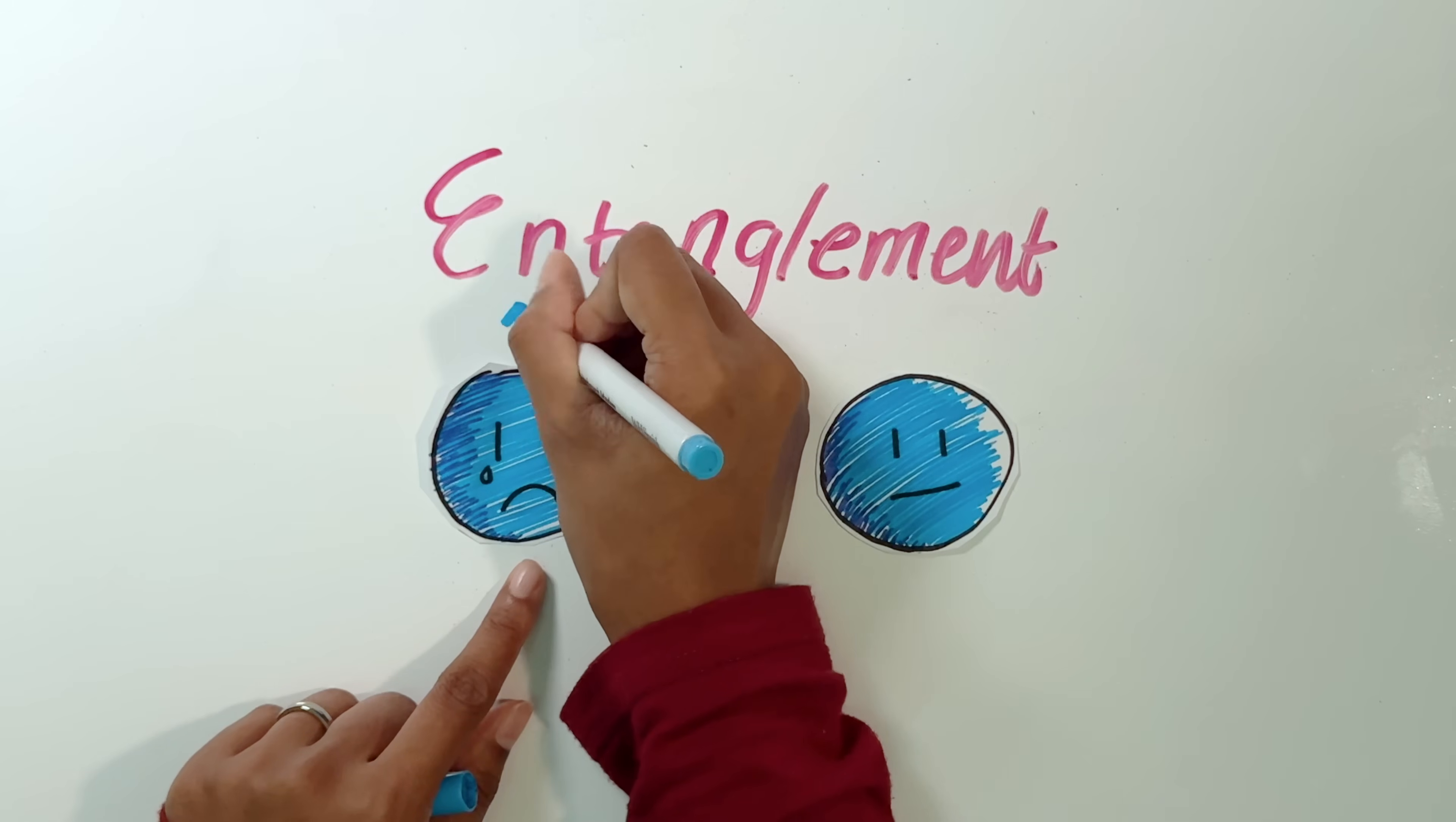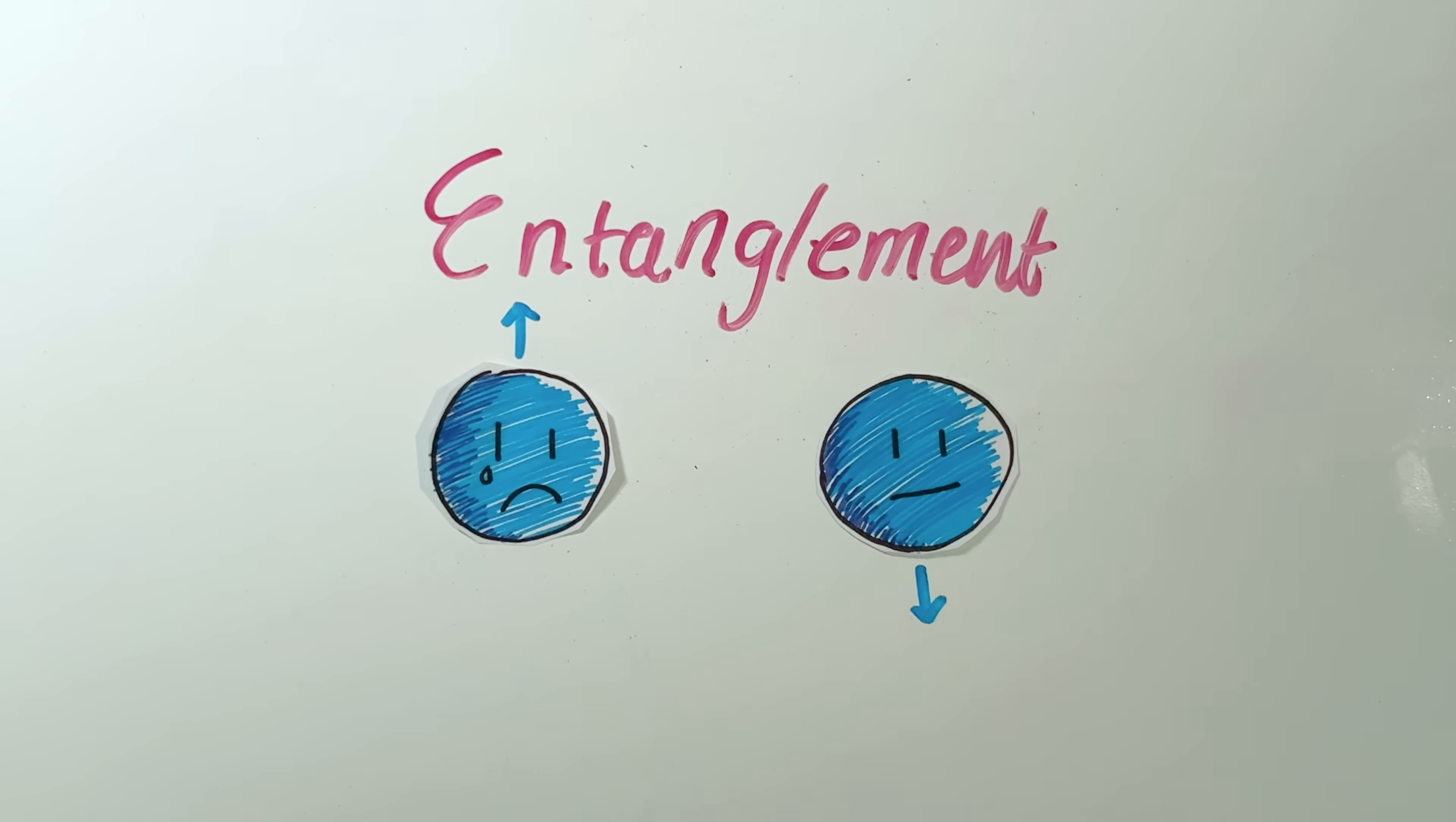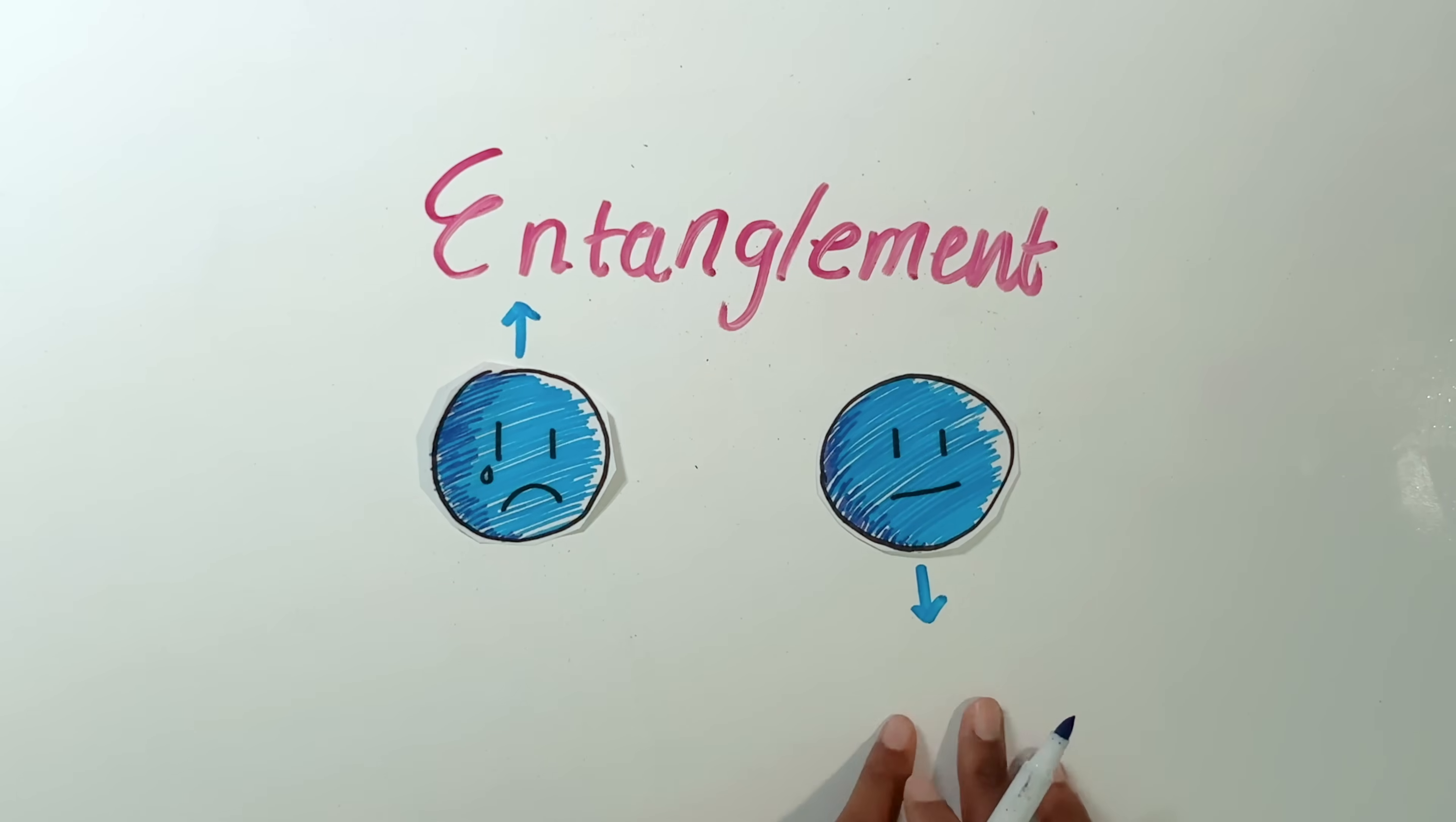For example, we've talked about how electrons have a property called spin. Spin is about the direction the magnetic moment is pointing, and this one might be spinning in another direction. Is this state entangled? No. And that's because this state, the state of this electron, doesn't in any way depend on the state of that electron.